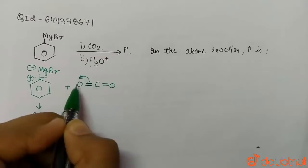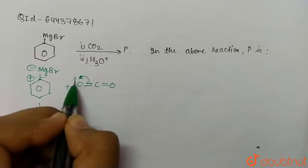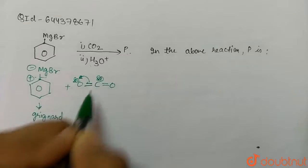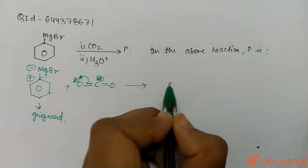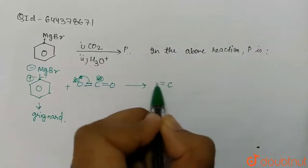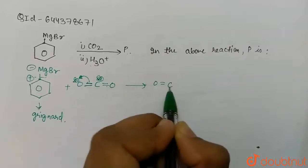So here we get the compound as C with the double bond O intact, and this becomes single bond O-, with the benzene ring attached like this.